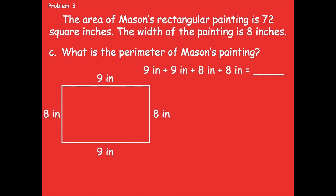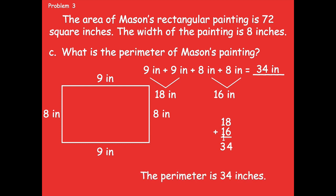Here is my equation: nine inches plus nine inches plus eight inches plus eight inches. Those are all of my side lengths, and I'm going to add those to find the perimeter. Nine plus nine equals 18, and eight plus eight equals 16. Now I combine those two numbers: 18 plus 16 — eight plus six is 14, and three tens. The perimeter of Mason's painting is 34 inches.